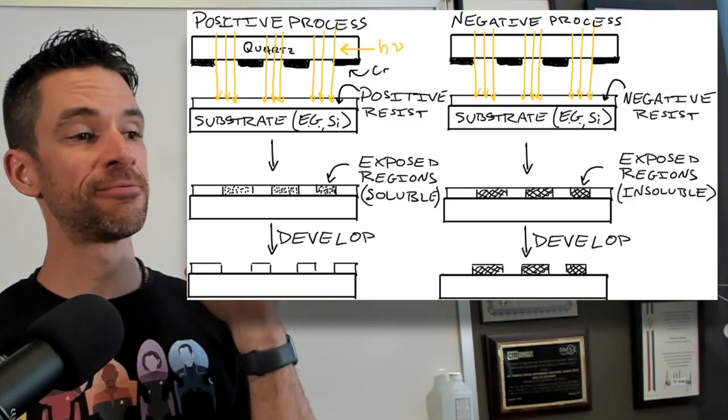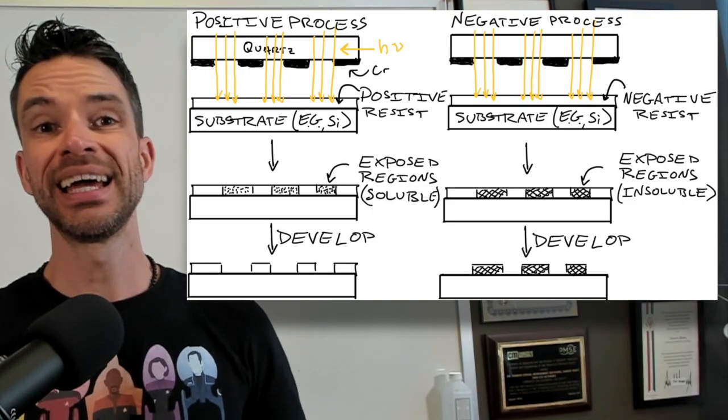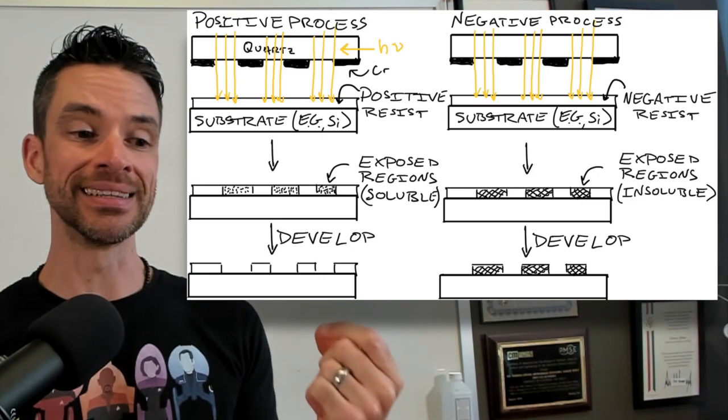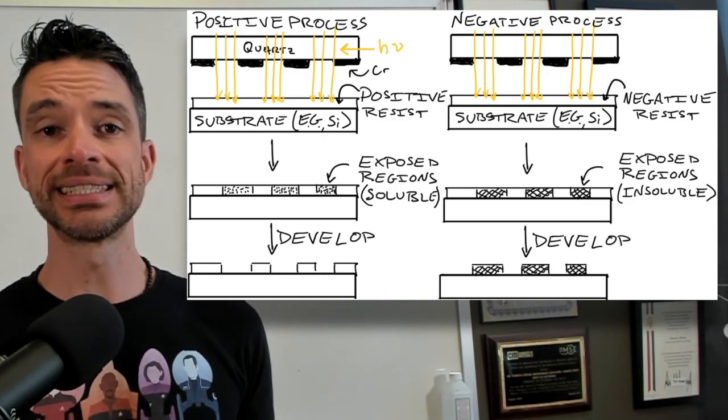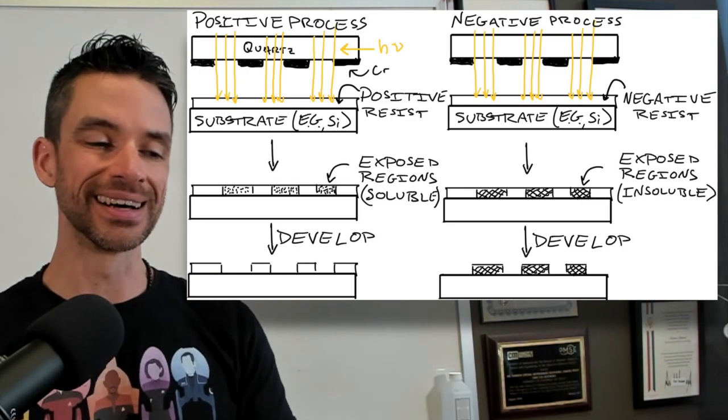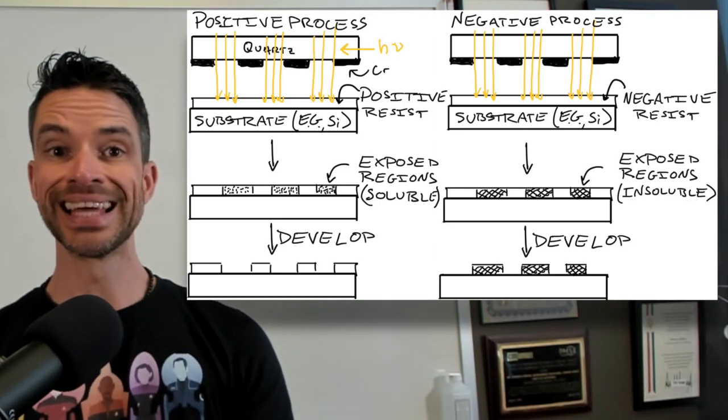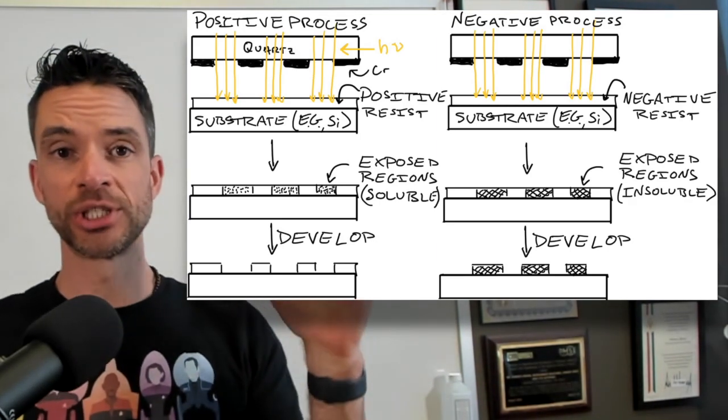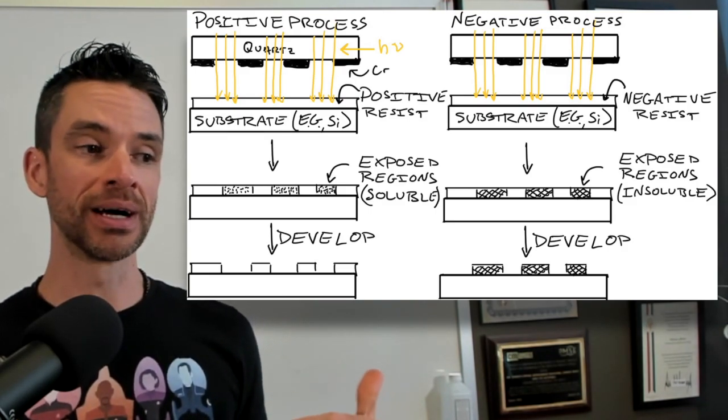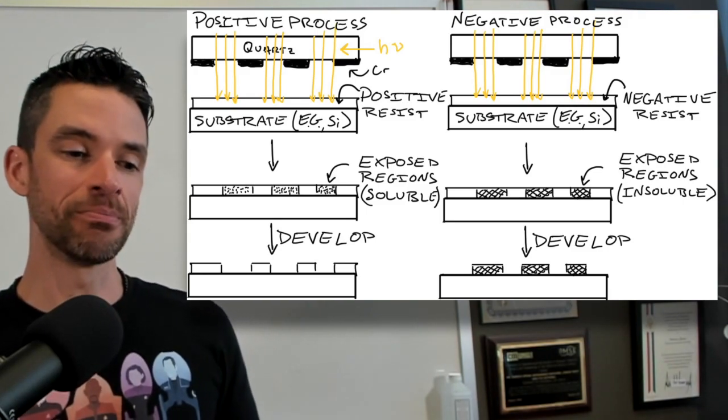In a fab, this process is done using an intense light source. And the device itself is called a stepper. And what the stepper does is through some very complicated arrangements of very precisely machined lenses, you project